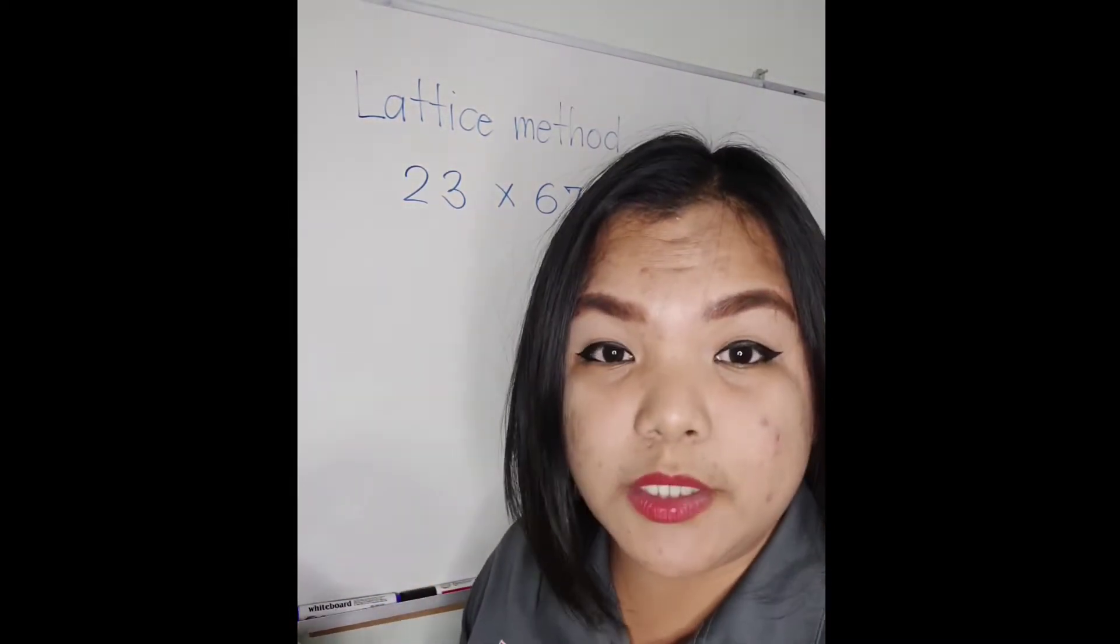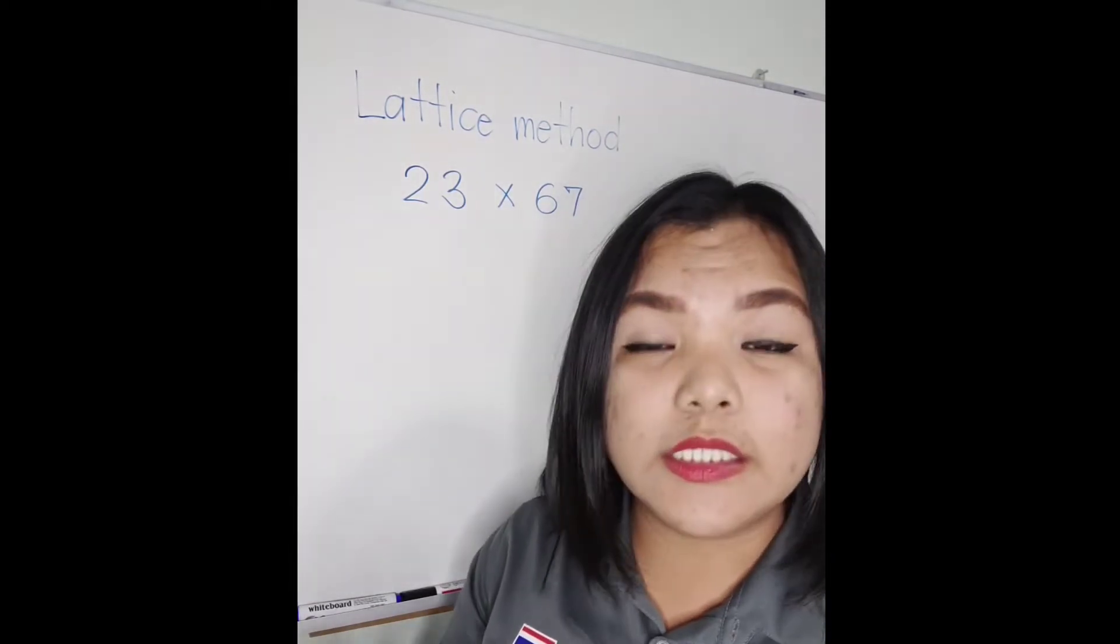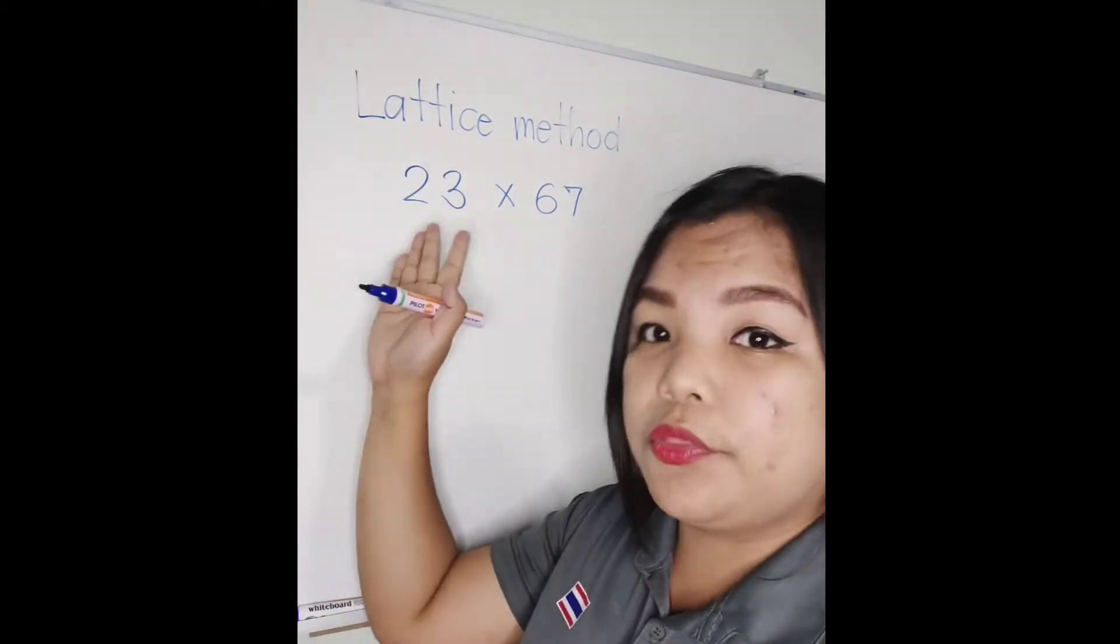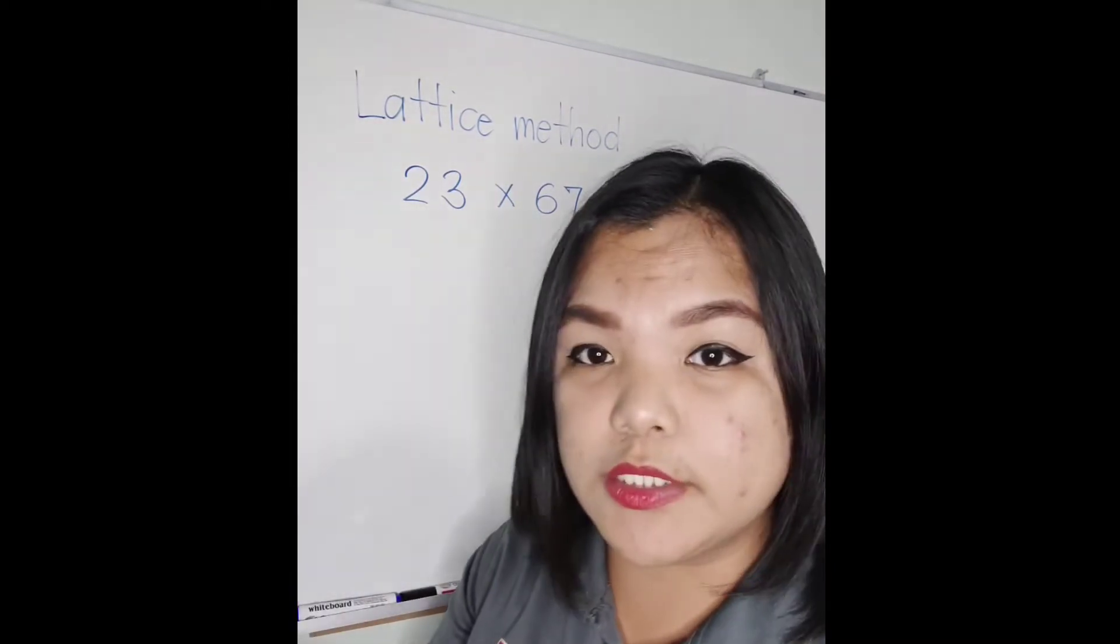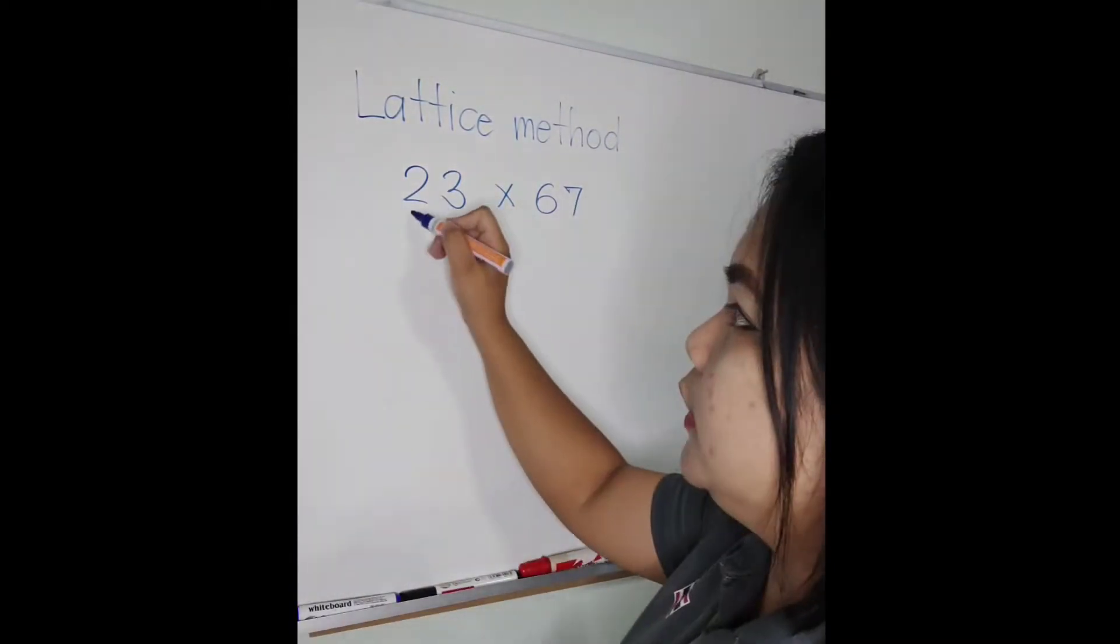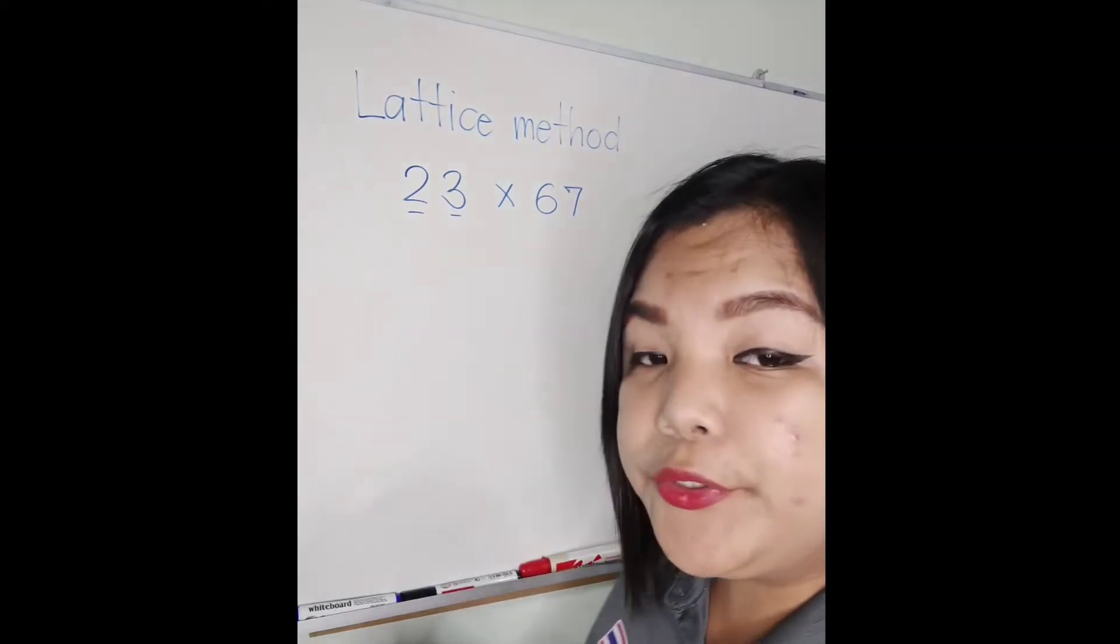With this lattice method, you can put any digits you want. It can be three by two, four by two, four by three, it depends. Now, how many digits do we have?